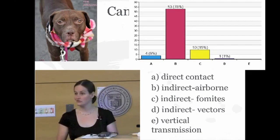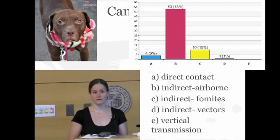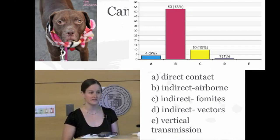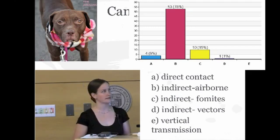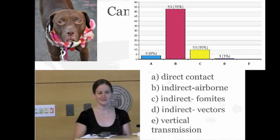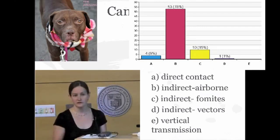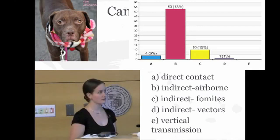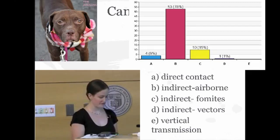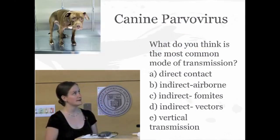Indirect fomites are also a concern — if you're snuggling a dog with kennel cough and then go snuggle a healthy dog, you're perfectly capable of transmitting the disease. Moving on to parvovirus, it's a very important disease especially in puppies, tending to cause really bad diarrhea and can even kill poor puppies. The infectious particles tend to be transmitted in the feces and are pretty hardy and sticky — not only can they be dispersed in the feces, they can also get stuck to the hair coat.